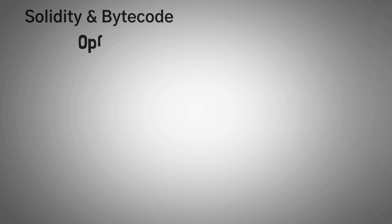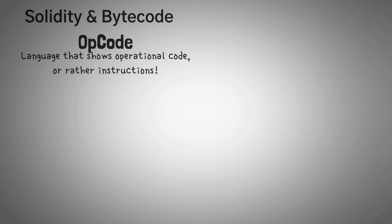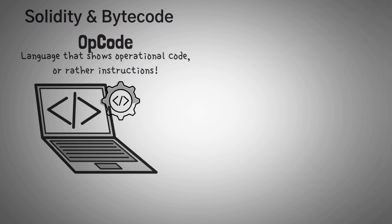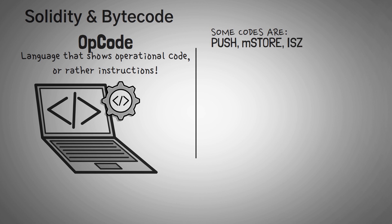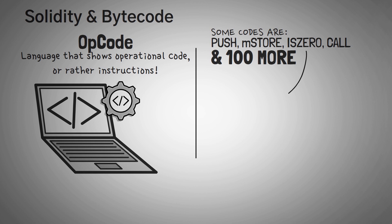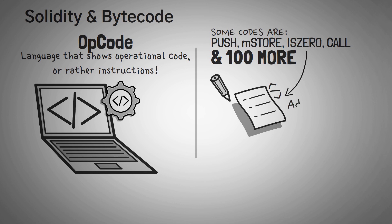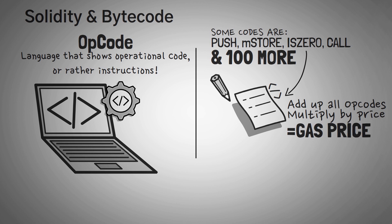Hypothetically, in between Solidity and bytecode, there's a middle theoretical language called Opcode. Opcode is literally a language that shows operational code — the instructions that the EVM must take to perform a smart contract transaction. You might recognize some of these opcodes, for example: push, mstore, is0, and call. There are over a hundred different opcodes. Each of these codes costs a certain amount of money to run on the EVM. If you add up all the opcodes in a single smart contract and multiply each opcode by its cost, you get the total amount of gas — or money — that it takes to deploy or use a smart contract.